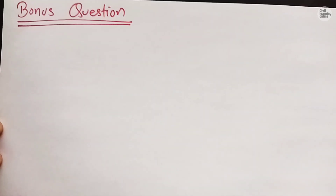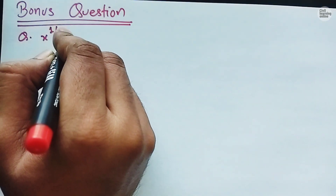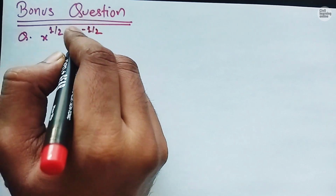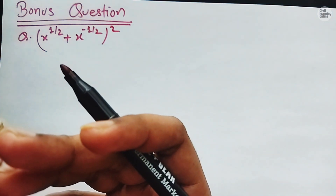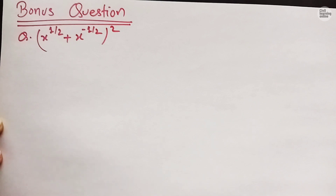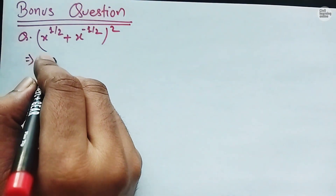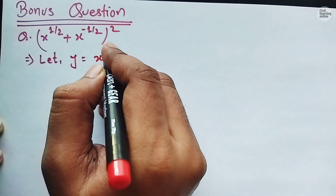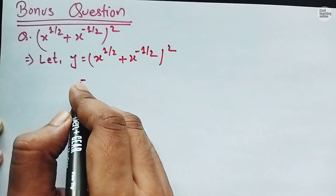If you are watching the bonus question, it means you are enjoying the lecture — do share and like this video. The bonus question is: we have x to the power 1 upon 2 plus x to the power minus 1 upon 2, whole square. Now I was teaching the sum rule but here we have a power — how can we solve this using the sum rule? Whenever you have such a question with a power, you should try to open it up first. Let y equals x to the power 1 upon 2 plus x to the power minus 1 upon 2, whole square.